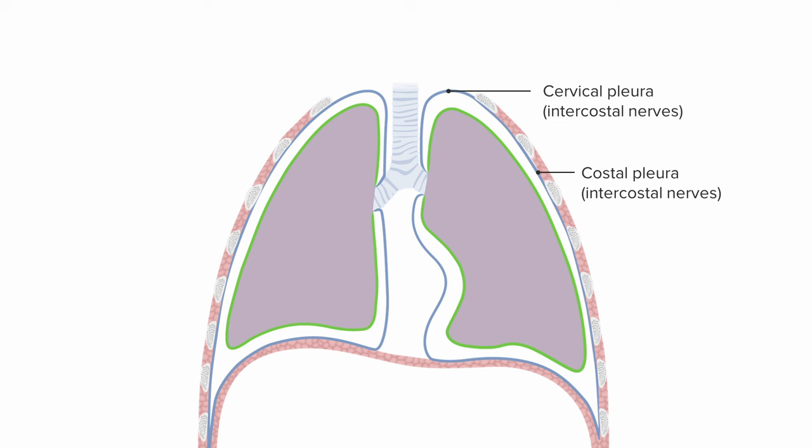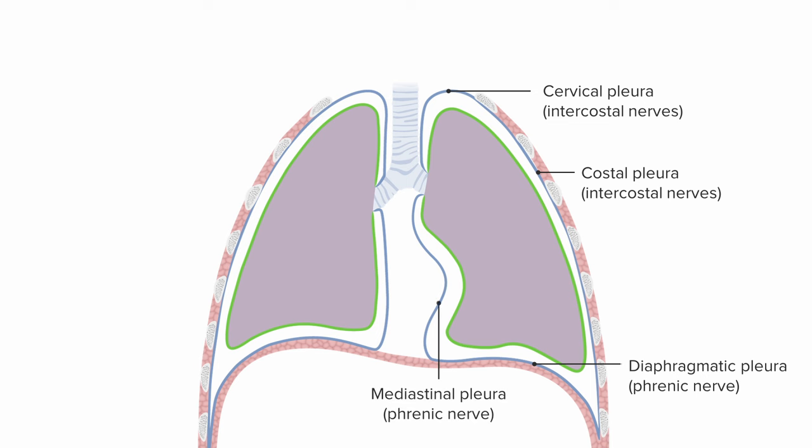The pleura that lines the superior surface of the diaphragm is called the diaphragmatic pleura, and that's innervated by the phrenic nerves. Phrenic means diaphragm, and it's the same nerve that provides motor innervation to the diaphragm. The portion of parietal pleura in the mediastinum is called the mediastinal pleura, and it's also innervated by the phrenic nerves.